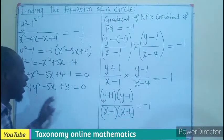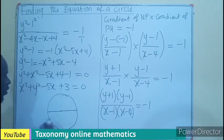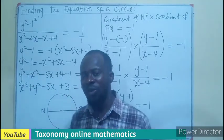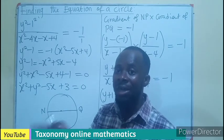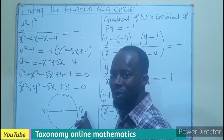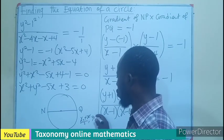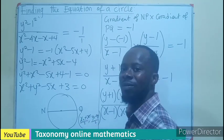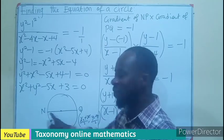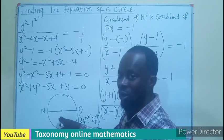Now I'll explain the second method. If I have the endpoints N and Q, to find the equation of a circle we need the center and the radius. The center is the midpoint of N and Q. The midpoint formula is: x = (x₁ + x₂) / 2 and y = (y₁ + y₂) / 2. Adding the x-values divided by 2 gives the x-coordinate of the center; adding the y-values divided by 2 gives the y-coordinate.